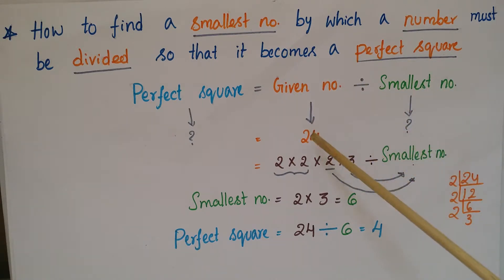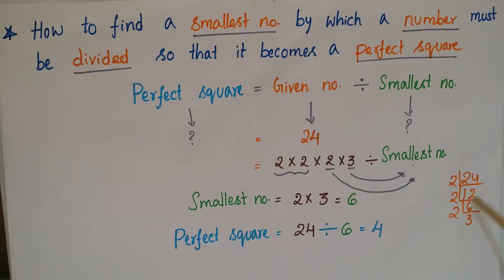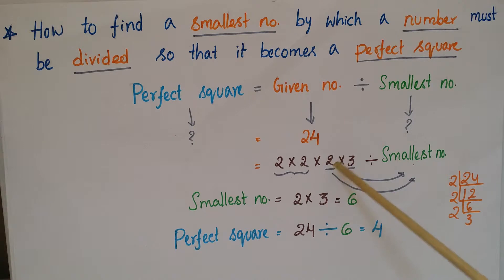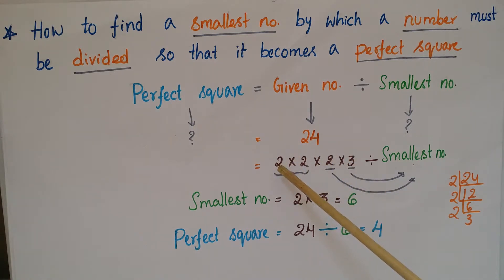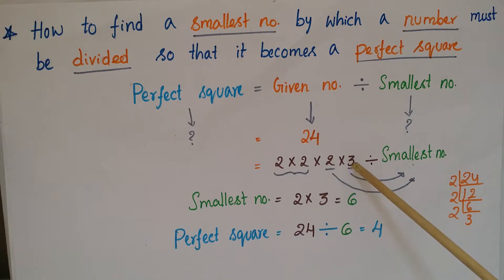Suppose the given number is 24. We prime factorize 24 like this: 2 × 12 = 24, 2 × 6 = 12, 2 × 3 = 6. So we can write 24 as 2 × 2 × 2 × 3. If you observe here, there is a pair of 2 × 2, but for the remaining 2 there is no pair, and for 3 there is also no pair.